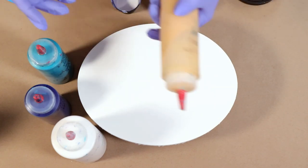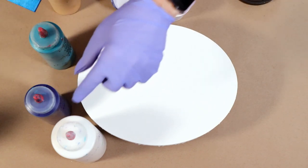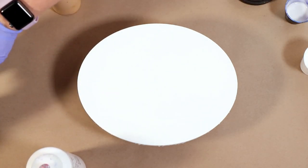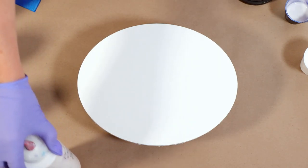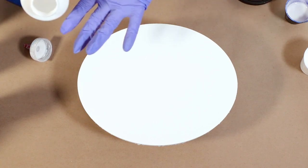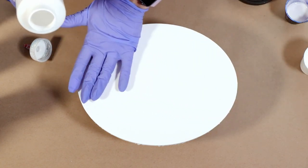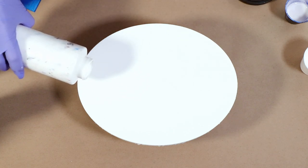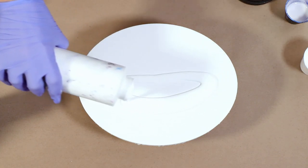These colors are mixed the same as the white, it's two and a half parts pouring medium to one part paint, that's how I do it. I'm just going to cover the canvas with white, maybe not completely, just kind of do a puddle.